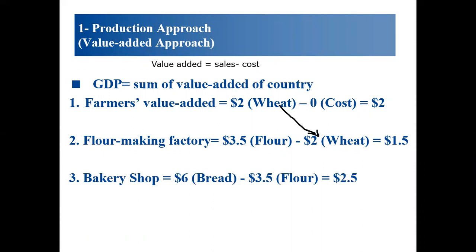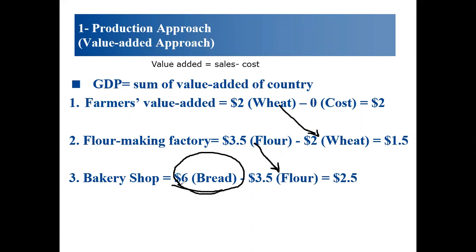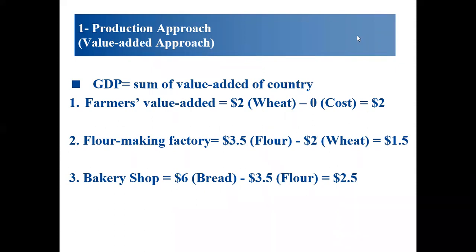The bakery shop sells bread for $6. This $6 represents the GDP for this product. The value added approach avoids double counting: if we add $2 plus $1.50 plus $2.50, we get $6. But if we add $2 plus $3.50 plus $6, that is double counting and miscalculation. So the GDP in this example is the summation of each stage: $2 + $1.50 + $2.50 = $6.